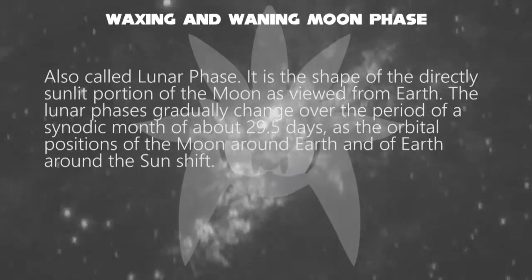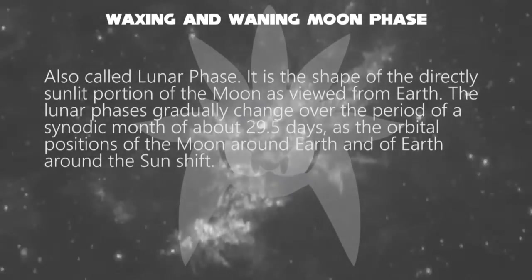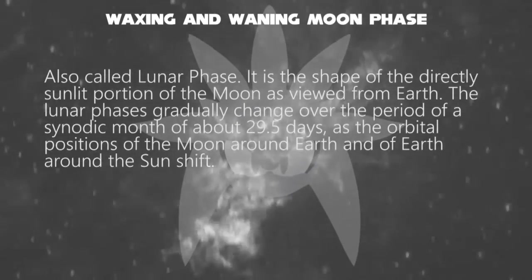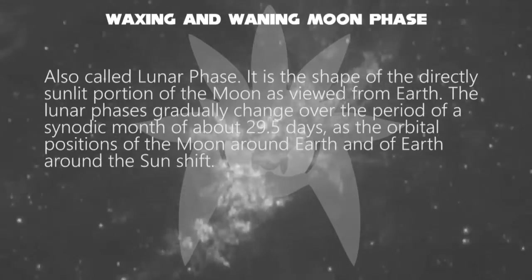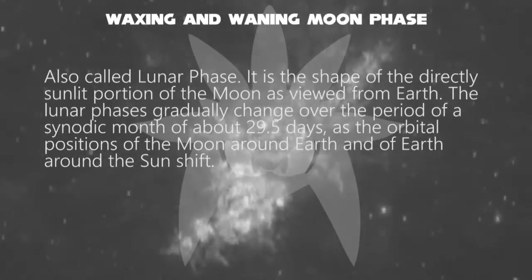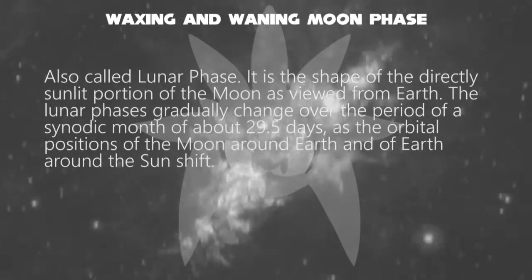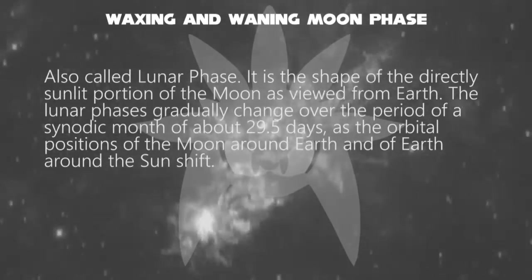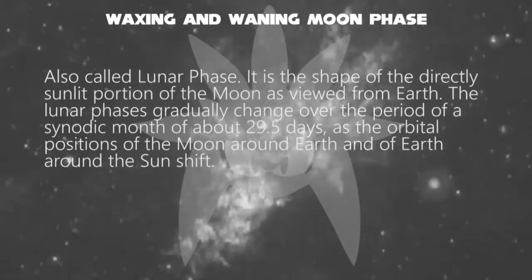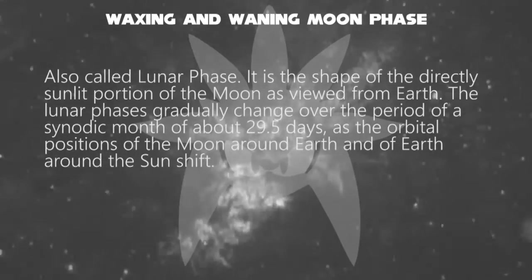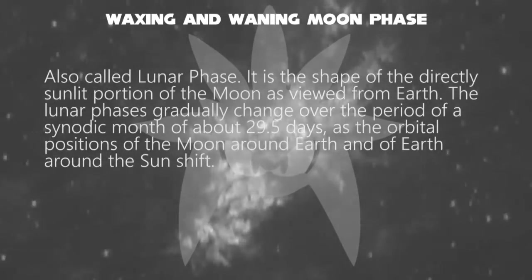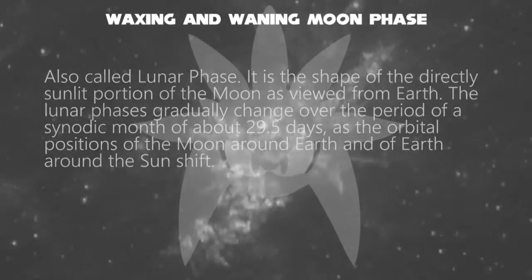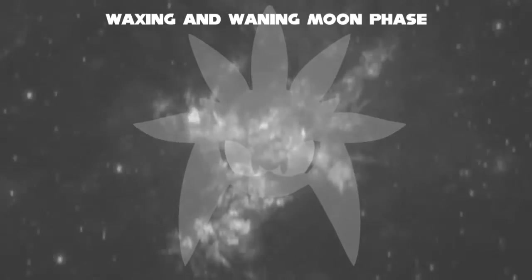It is the shape of the directly sunlit portion of the moon as viewed from Earth. The lunar phases gradually change over the period of a synodic month of about 29.5 days, as the orbital positions of the moon around Earth and of Earth around the sun shift.